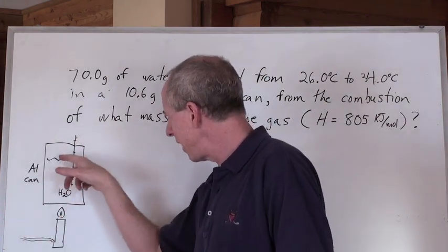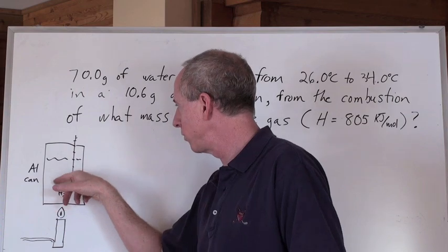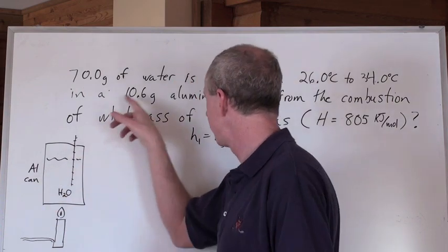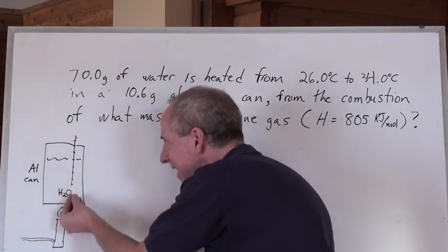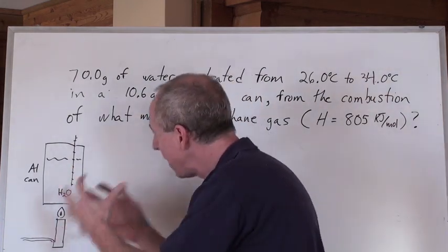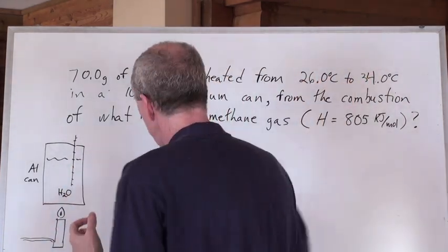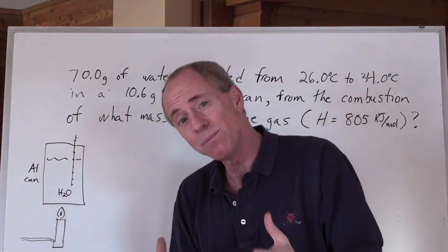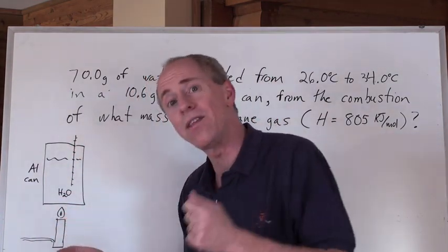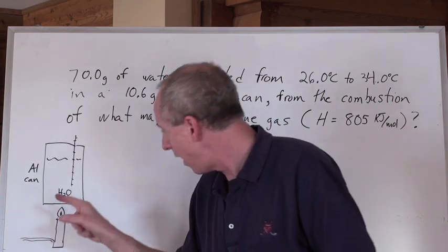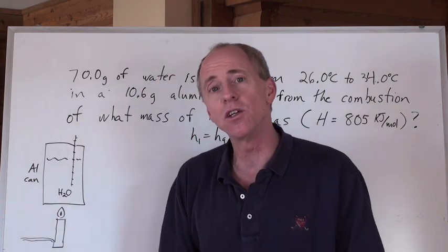You got a thermometer in an aluminum can. You got some water in there. You got your 70.0 grams of water in here. Here's your 10.6 gram aluminum can. I'm burning some methane and it's heating up this right here. And I want to heat up this water from 26 to 34. So if that's the case, how many moles and then how many grams of that methane actually underwent combustion?